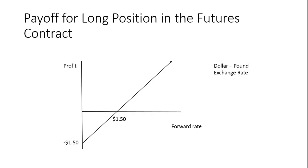The payoffs to a long position in a futures contract look the same as for a long position in stock. If you buy at $1.50 and the rate goes up, you make money. If the rate goes down, you lose money. If the forward rate falls to zero, the most you can lose is $1.50, because you paid $1.50 for a pound and the price is now zero.